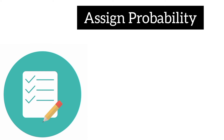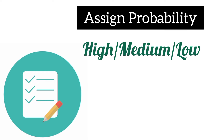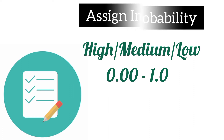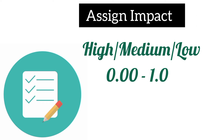Now, when you have your list, assign probability. For each risk element, determine if the likelihood of it actually materializing is high, medium, or low. If you absolutely have to use numbers, figure the probability on a scale from 0 to 1. Take a similar process to assign the impact of each risk, and then list all the elements you have identified from the highest risk to the lowest risk.